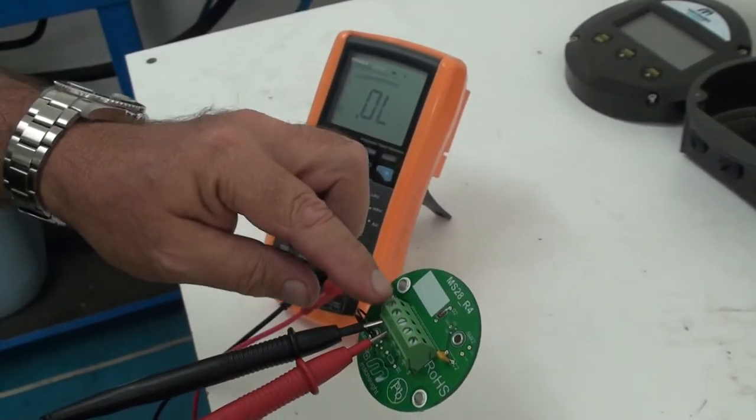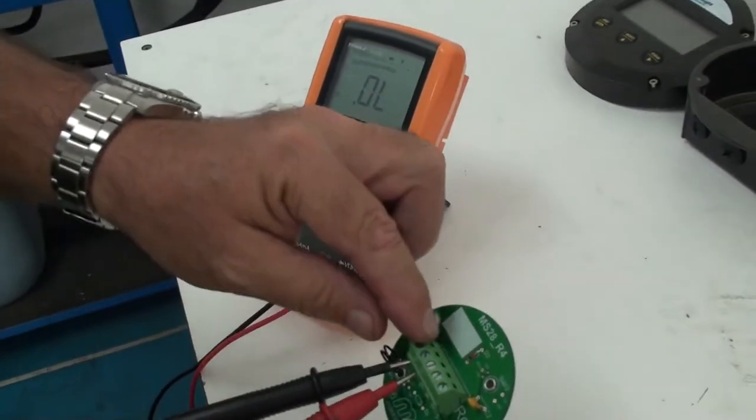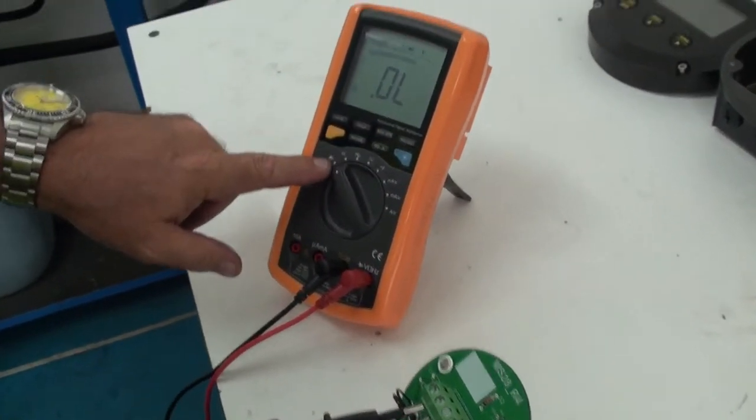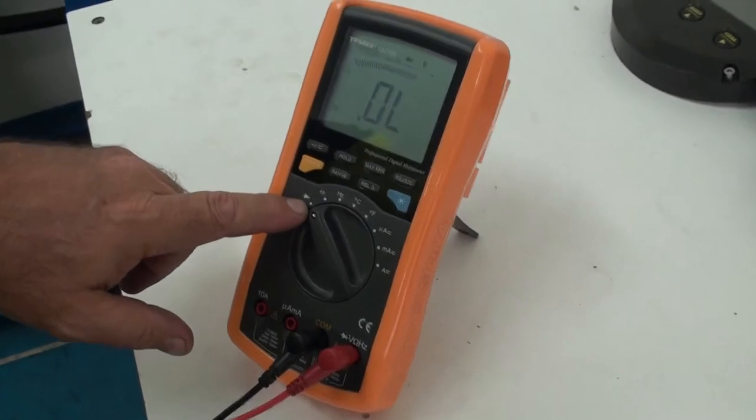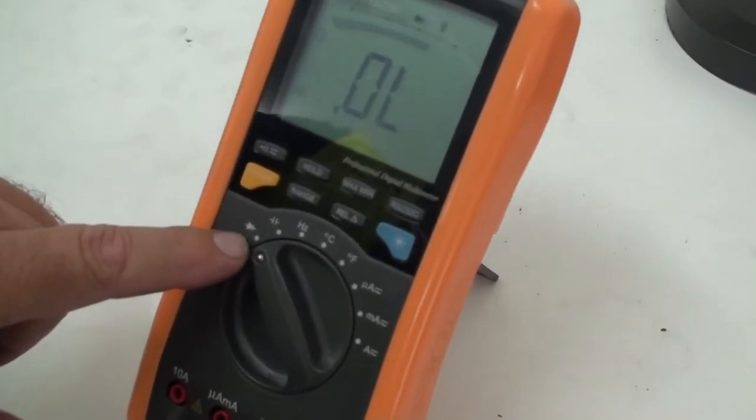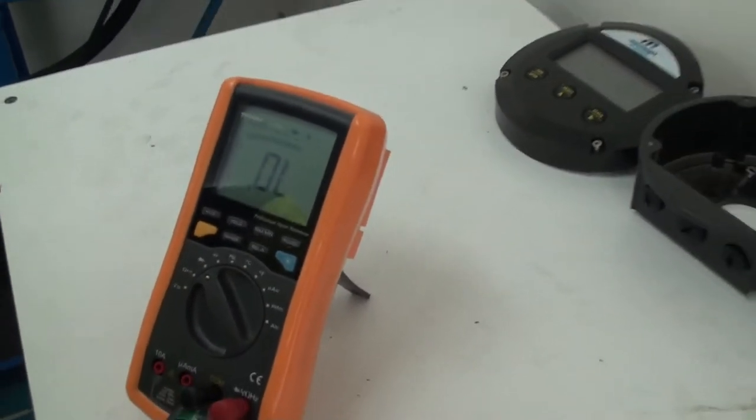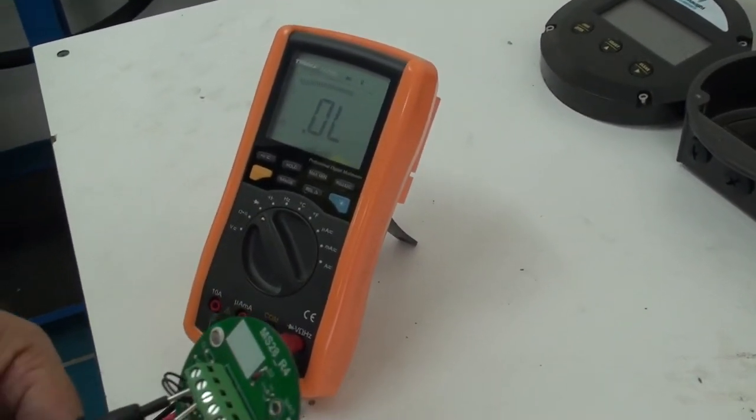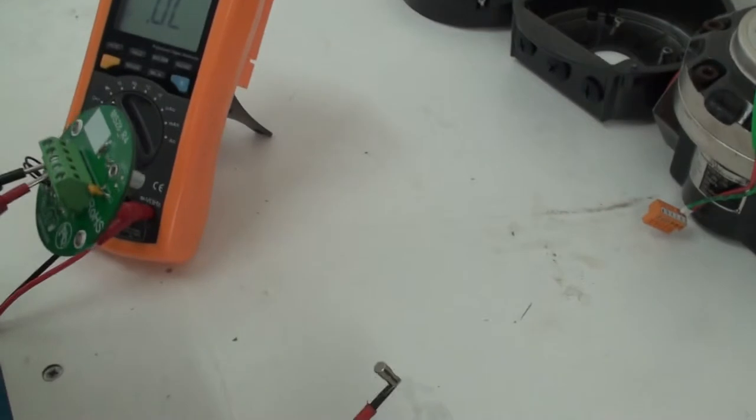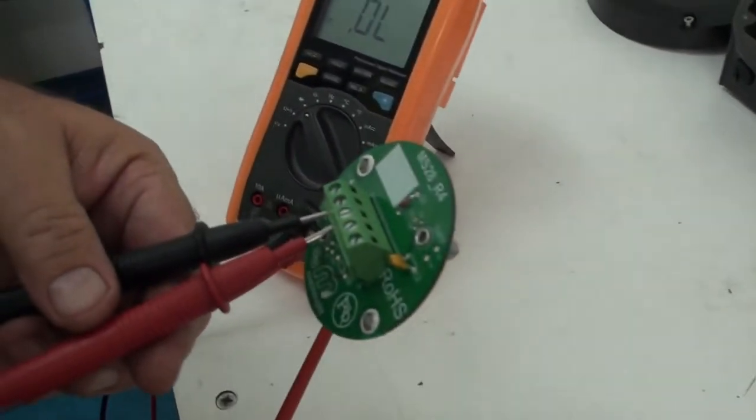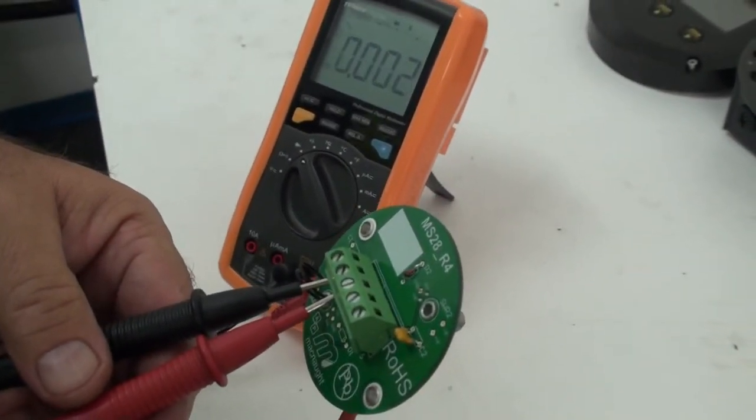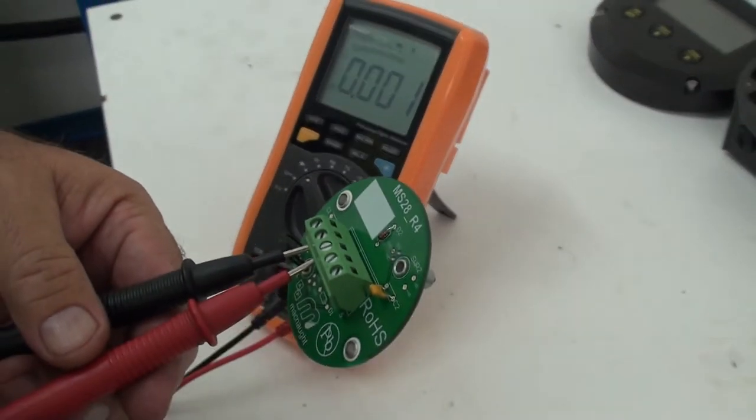So what I've done is I've put my multimeter probes into terminals 1 and 2. I've set my multimeter onto continuity, and it's open circuit at the moment. I then have a magnet on the end of my screwdriver, and when I wave that magnet underneath the sensor, you can see it goes short circuit.